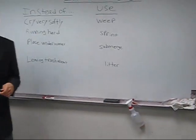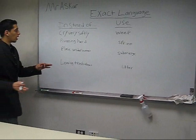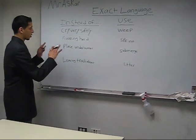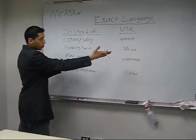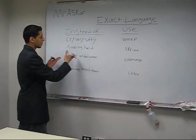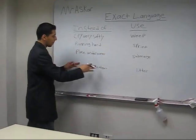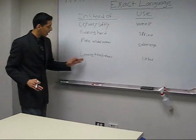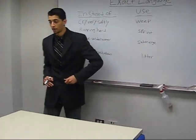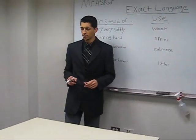So, as you see here, you have to get a better concept of it. Instead of 'cry very softly,' you'd use 'weep.' 'Running hard,' you'd use 'sprint.' 'Place under water,' you'd use 'submerge.' And 'leaving trash about,' you'd use 'litter.' Do you guys understand that? Yeah. I like that. I understand. It's good.